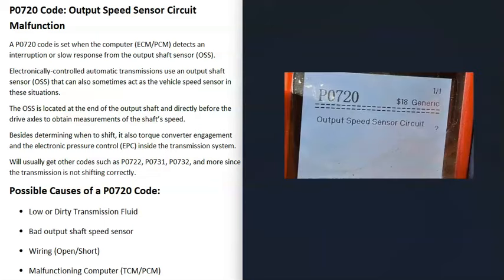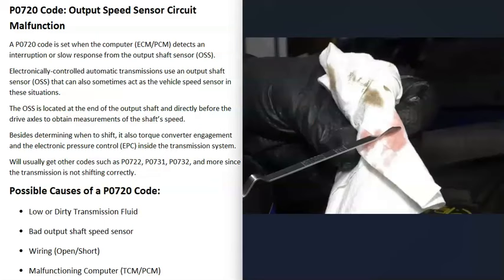What are some possible causes of a P0720 code? First, check your transmission fluid. Make sure it's not low or really dirty, because low transmission fluid can cause a lot of problems.